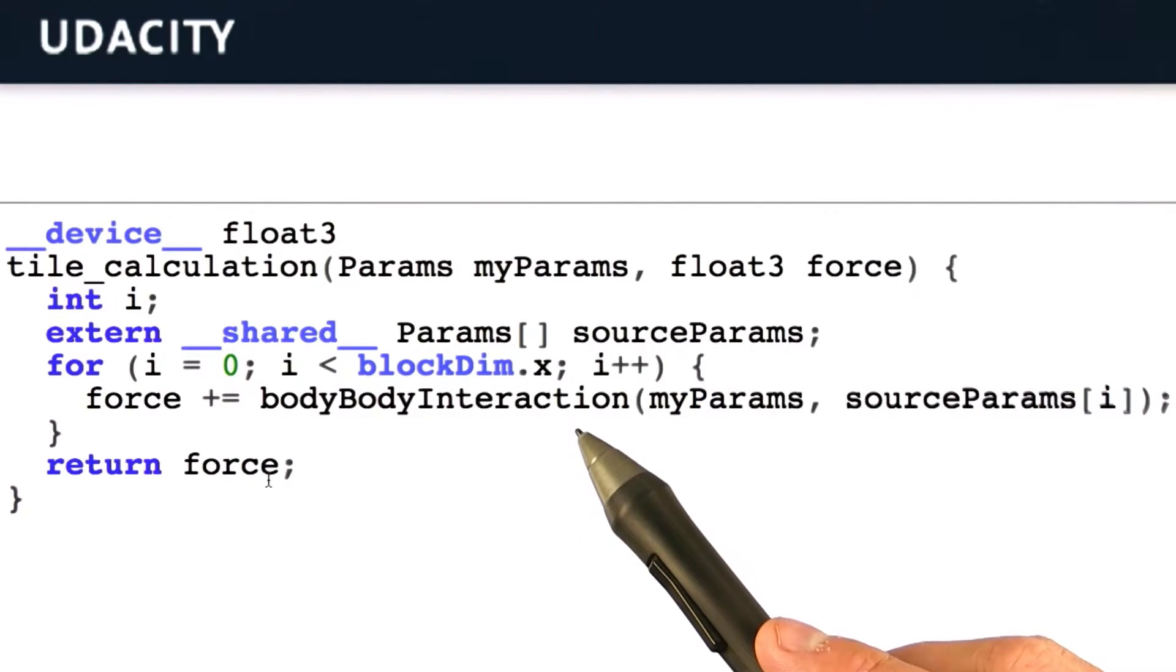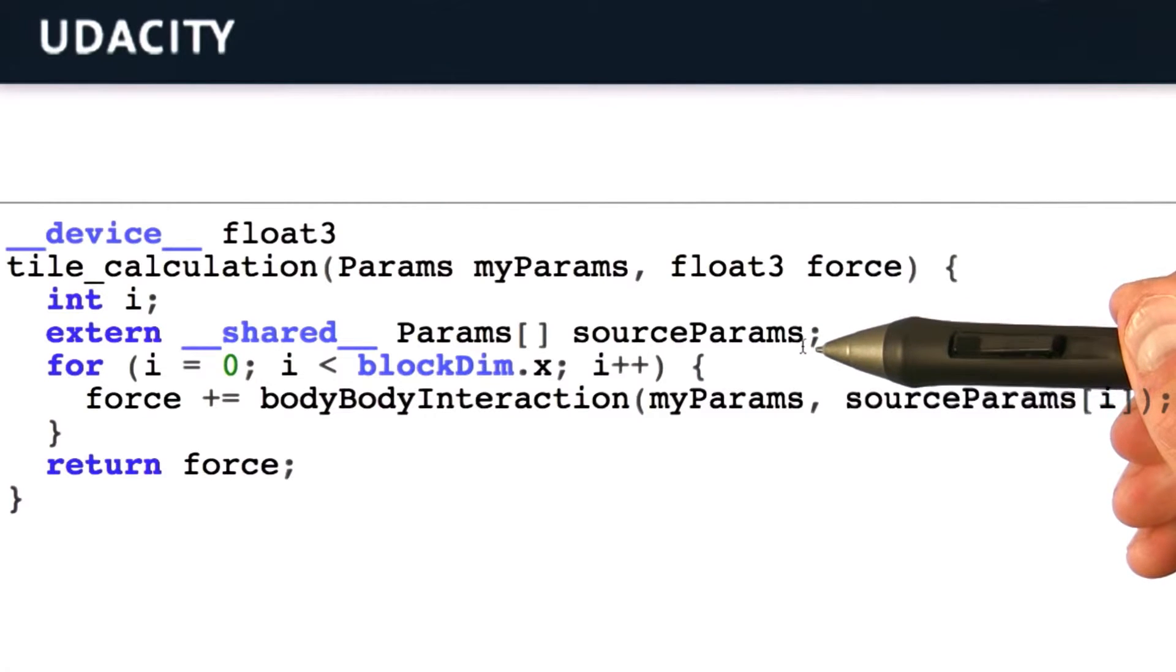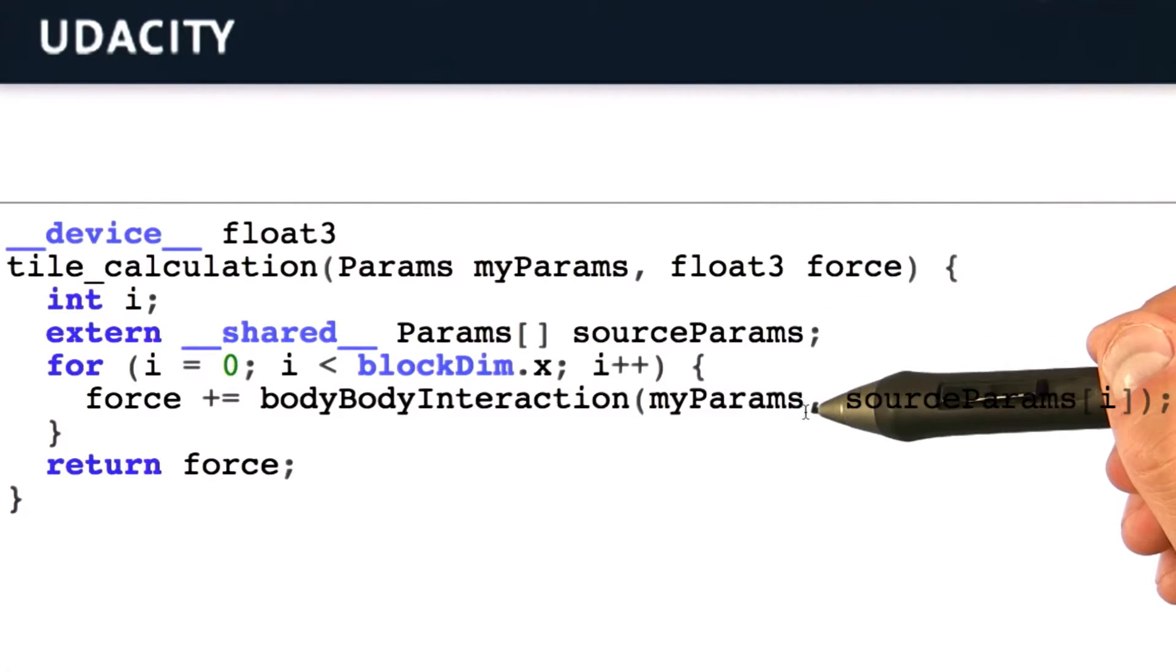We assume that we store the parameters for the p source objects in shared memory. Source params here. Then we just loop p times over those p objects.